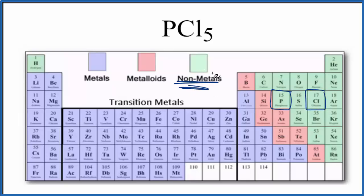So when we have nonmetals bonded together, we have a covalent compound. PCl5 is a covalent compound. It's also called a molecular compound.